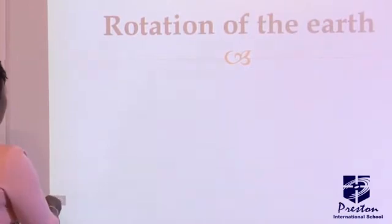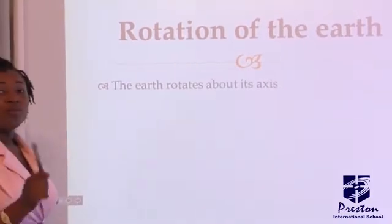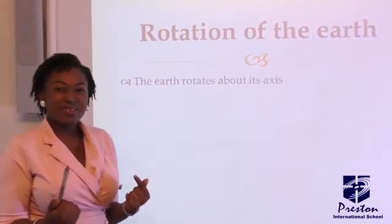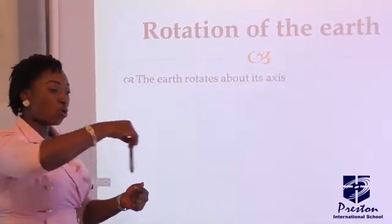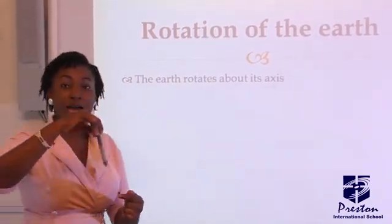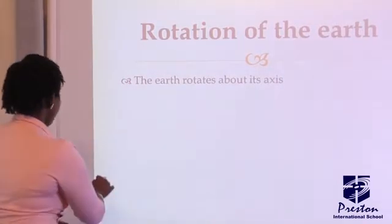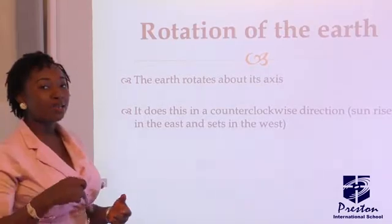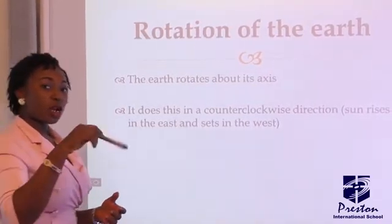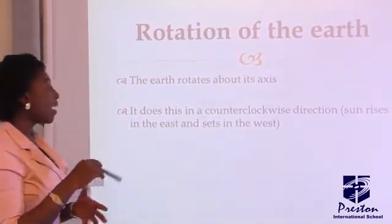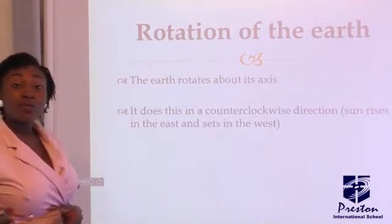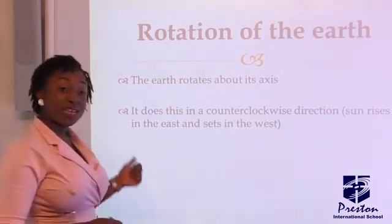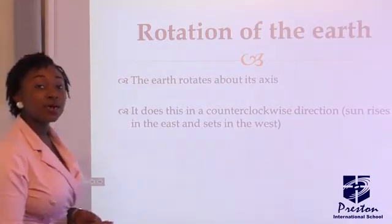Now, rotation of the earth. The first thing we need to know is that the earth rotates about its axis — it's just like someone rolling around a particular spot. It does this in a counterclockwise direction, not clockwise but counterclockwise, and as a result of this, the sun rises in the east and sets in the west.